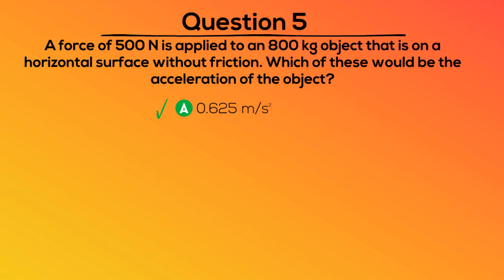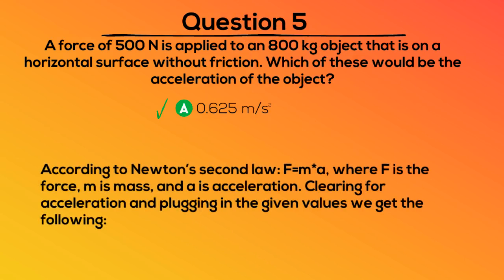The correct answer is A, 0.625 meters per second squared. According to Newton's second law, F equals M times A, where F is the force, M is mass, and A is acceleration. Clearing for acceleration and plugging in the given values, we get the following.